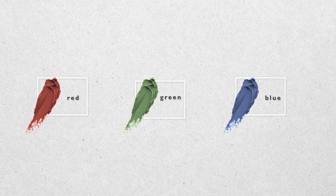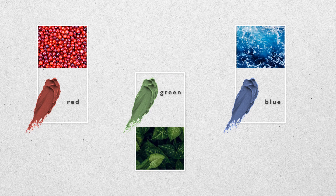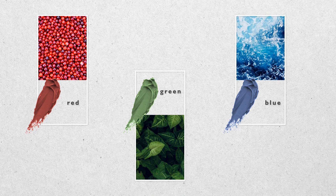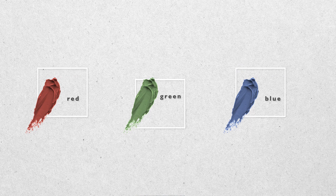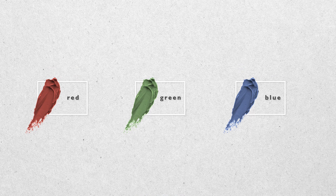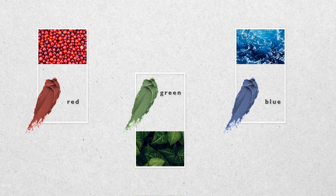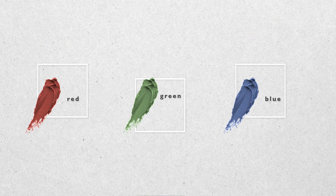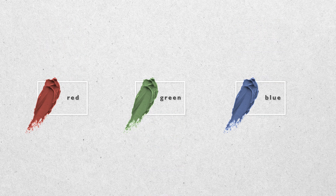The white outline box gets larger, again all achieved with Morph simply by making the box larger on the second slide. In this instance the red and blue boxes grow upwards while the green box grows downwards, just for the look of it.